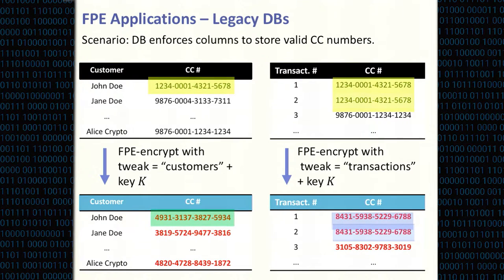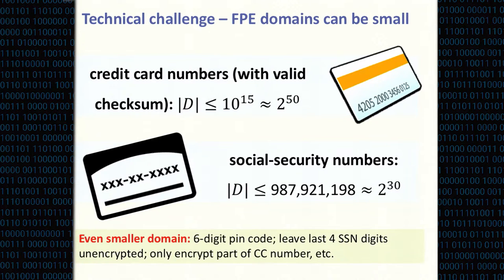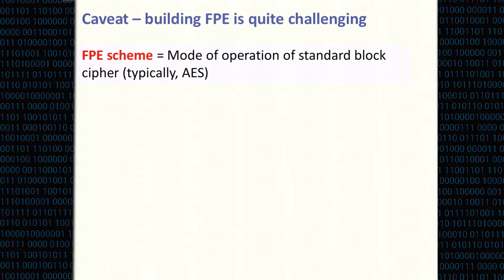One technical challenge with format preserving encryption is that the domains considered are potentially small, especially compared to the traditional block cipher domain of 2^128 elements. You might have roughly 2^50 valid credit card numbers, even fewer social security numbers, and FPE is applied to smaller domains like pin numbers, or partially encrypted SSNs or credit card numbers, making the domain even smaller. This has made building FPE schemes in practice very, very hard.